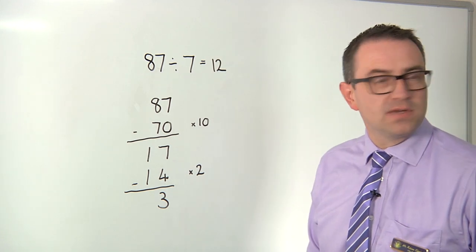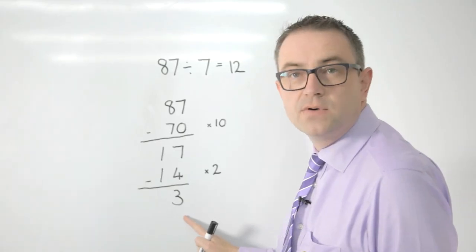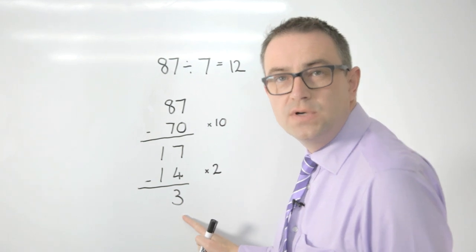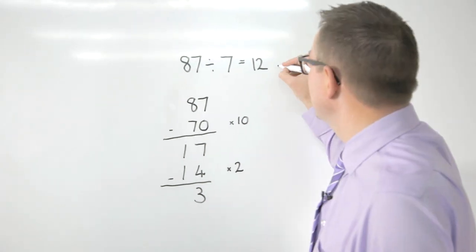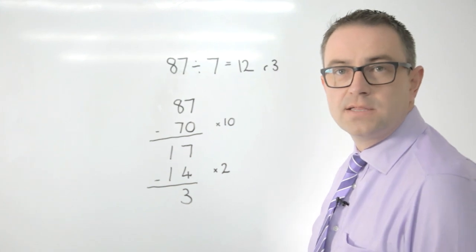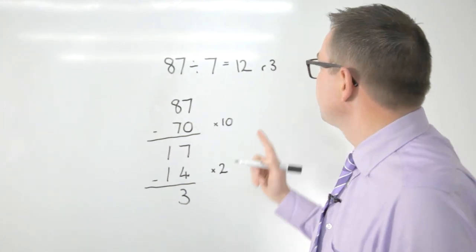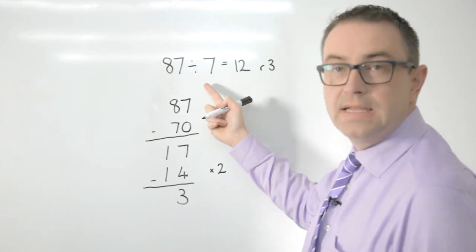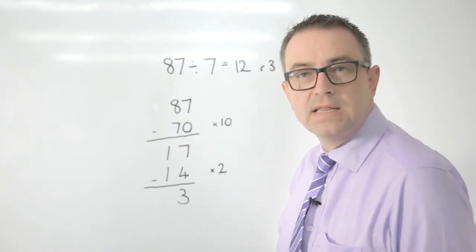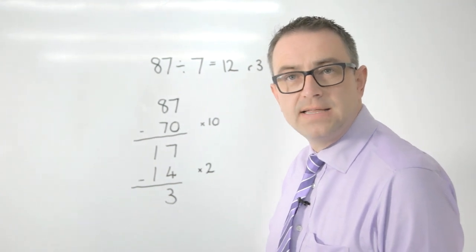Now as the children move through Key Stage 2, they'll go from recording that as r3, remainder 3, to looking at it as a fraction, in which case this would be 3 sevenths. They might convert that to a decimal, but also they're going to have to think about the context of the question.